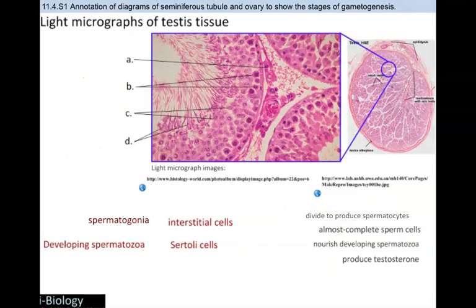Go ahead and practice labeling and annotating these micrographs of the seminiferous tubules. As a hint: this is the outer part of the tubule, and this is the lumen over here. Along the outside of the tubule, consider what structures you should have, then on the actual outside of the tubule, and as you work in closer to the lumen. You can go ahead and label using these, and I will show the answers on the next slide.